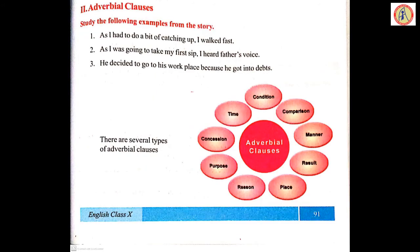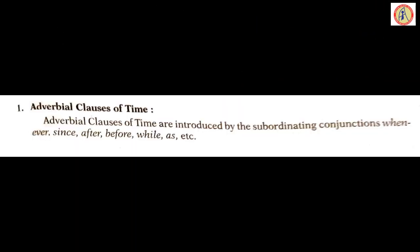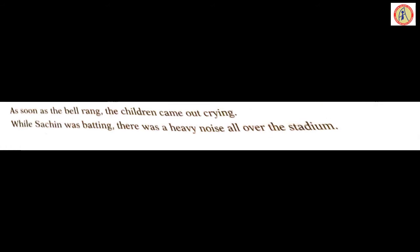The next grammar topic is adverbial clauses. There are several types. Adverbial clauses of time are introduced by subordinating conjunctions: whenever, since, after, before, while, as, as soon as, etc. Example: 'As soon as the bell rang, the children came out crying.' 'While Sachin was batting, there was a heavy noise all over the stadium.' Adverb of place uses 'where' or 'wherever.' Example: 'He went to the place where he spent his childhood.' 'Nani takes his laptop wherever he goes.'